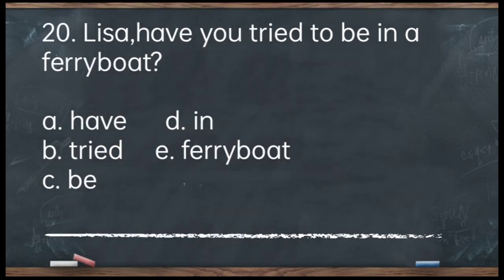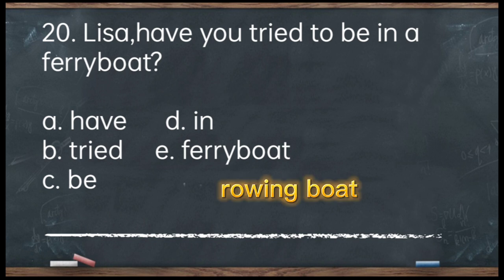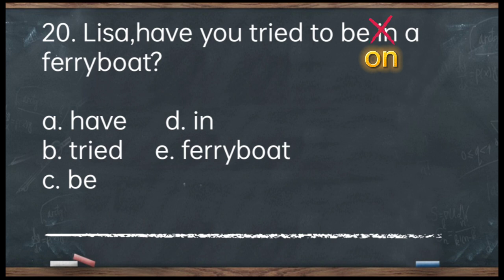Number 20. Lisa, have you tried to be in a ferry boat? A. Have. B. Tried. C. Be. D. In. E. Ferry boat. The answer is letter D — 'in.' For a boat, you use 'in' if it is an open craft such as a rowing boat. However, if the boat is enclosed, you use 'on.' So we say: we are in a boat (open craft), but we are on a ferry boat because it's enclosed — just like a ship. Corrected: Have you tried to be on a ferry boat?